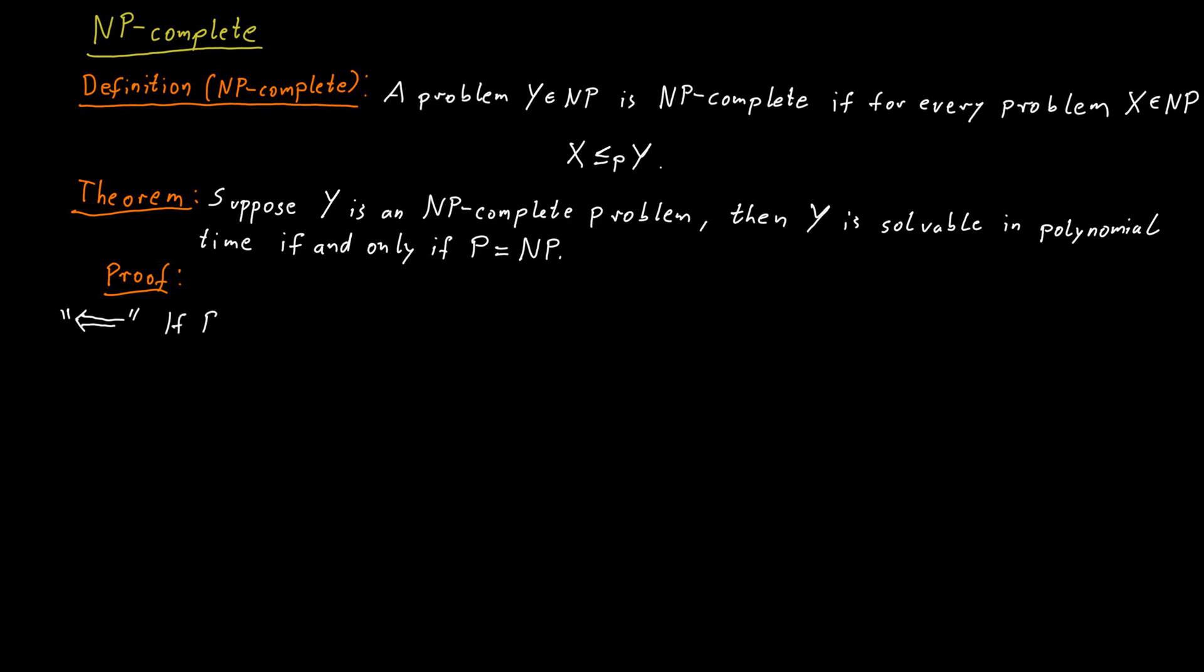So first of all, if P is equal to NP, then it should follow that Y is solvable in polynomial time. But if Y is NP-complete, it is in particular contained in NP. And if P is equal to NP, it means Y is also in P, and then by definition it can be solved in polynomial time. So this direction is true.